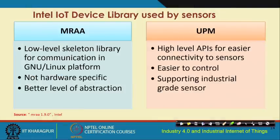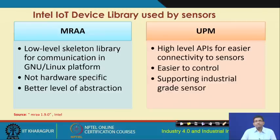Different device libraries are also available for programming purposes. The Intel IoT device library is one such library, and it has different components: one is the MRAA component, which is a low-level skeleton library for communication in the GNU Linux platform. There is another component which provides high-level APIs for easier connectivity to sensors, and UPM also helps in control applications. Together, UPM and MRAA help in supporting industry-grade sensing.